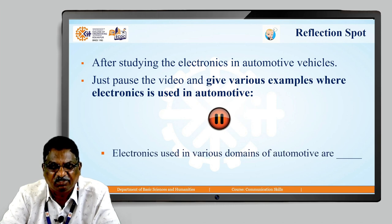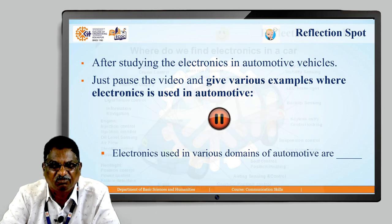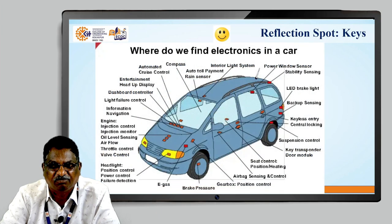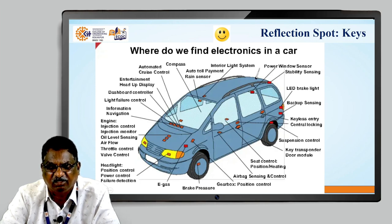Electronics is used in several domains of automotive. The red points indicate where electronics is used in the car — for example, LED lighting. These are the points showing the domains where electronics is applied.